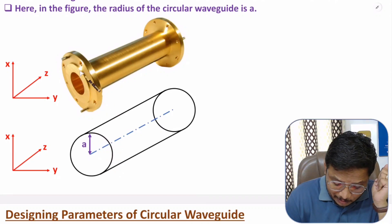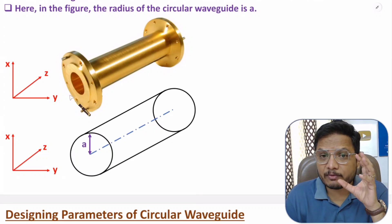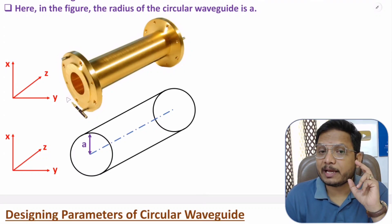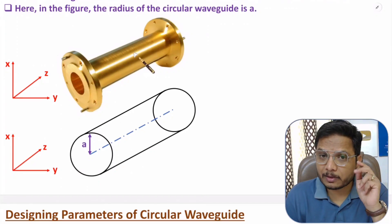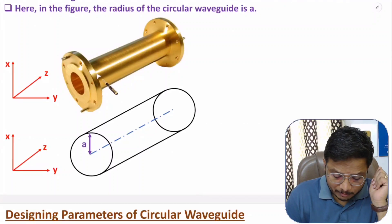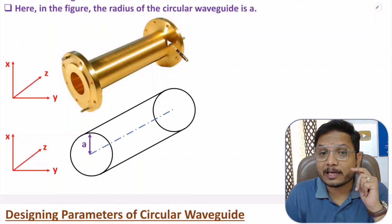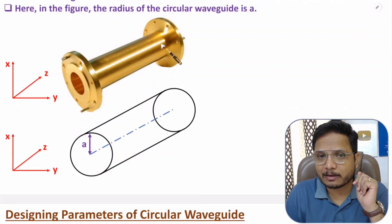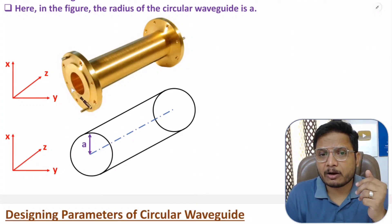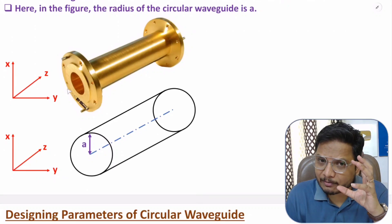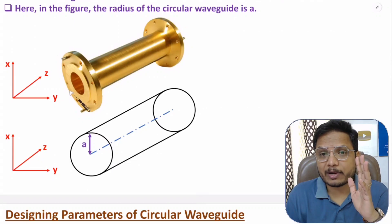The manufacturing of circular waveguide is easier compared to rectangular waveguide. So when we fabricate a circular waveguide, the fabrication process is easier compared to rectangular waveguide. Also, the joining of circular waveguide is easier compared to rectangular waveguide — joining it with a horn antenna or some other circular waveguide.